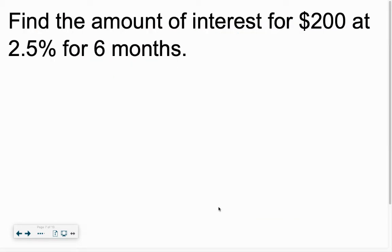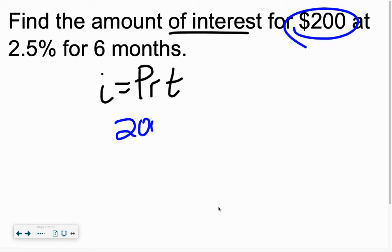Find the amount of simple interest for 200 at 2.5% for six months. Sometimes there's not big word problems. They just say it very, very quickly and briefly. So find the interest. It's our friend, IPERT. Now we go. Find the amount of interest. So we're going to put in our principal. The amount of money we start with? 200.